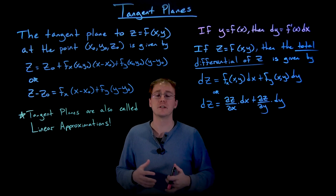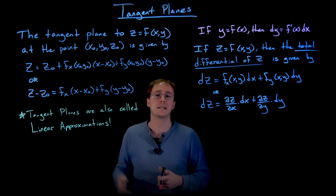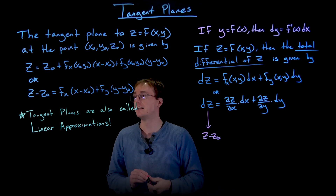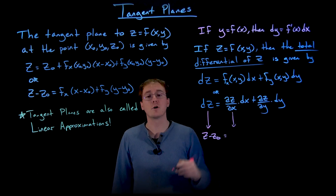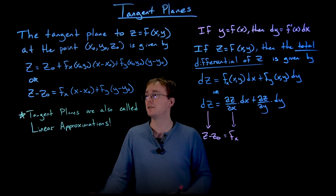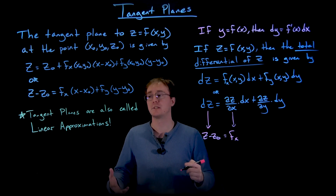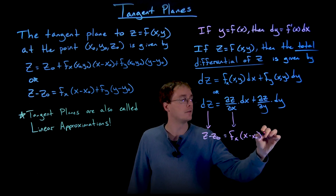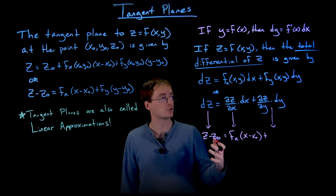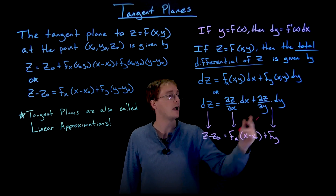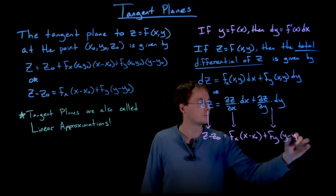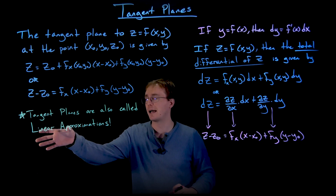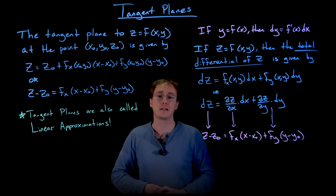These total differentials are really just a reformulation of a linear approximation or tangent plane. The total differential dz plays the same role as z minus z naught in our earlier formula. The partial derivative ∂z/∂x multiplied by dx corresponds to f_x times (x minus x naught), and ∂z/∂y times dy corresponds to f_y times (y minus y naught). Making these substitutions shows that the total differential is really the same as finding the linear approximation or tangent plane at a given point.